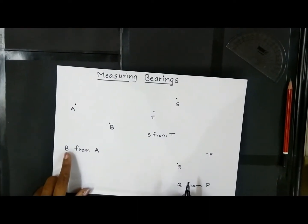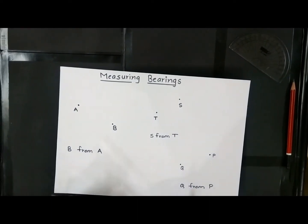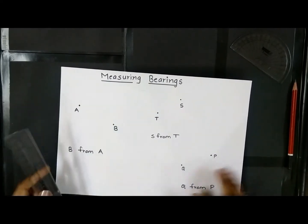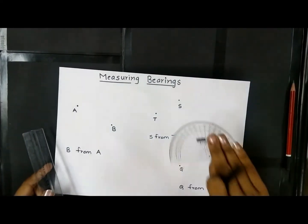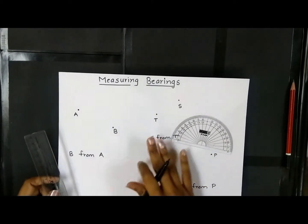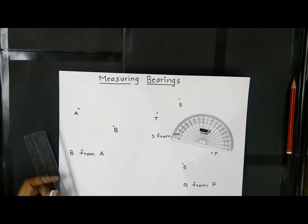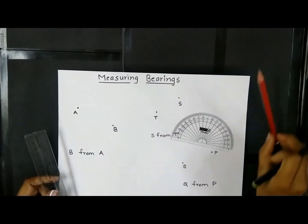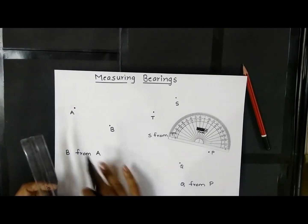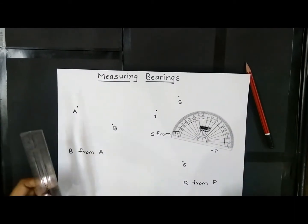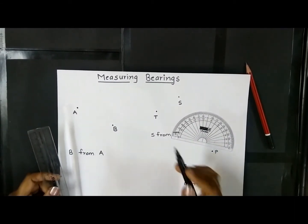To measure bearing of B from A, what we need here is a ruler and a protractor. All these constructions you are technically supposed to do with a pencil, but for your reference to make it more clearly visible to you, I am going to do this with a sketch pen.